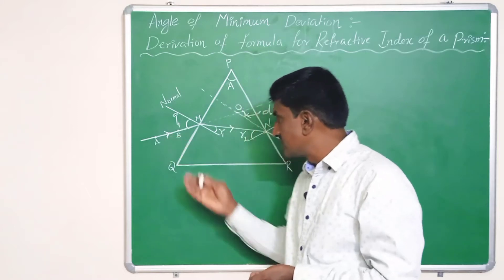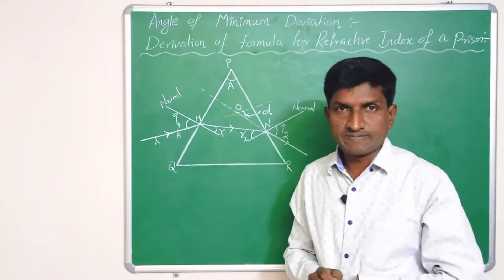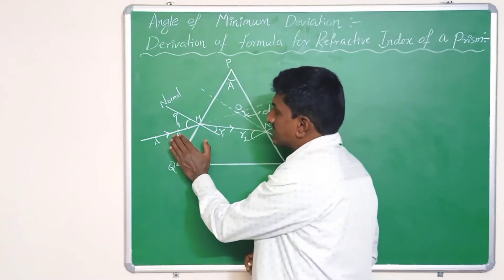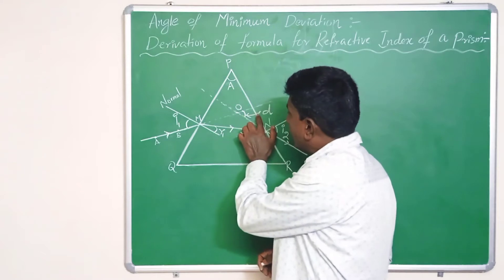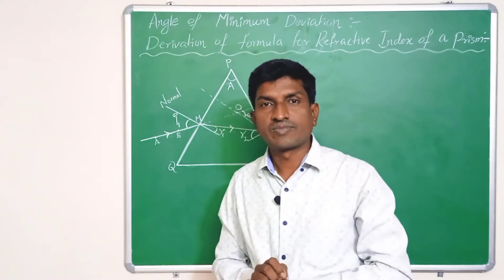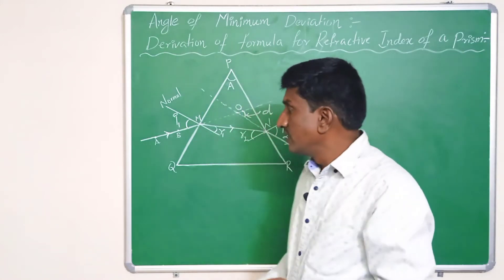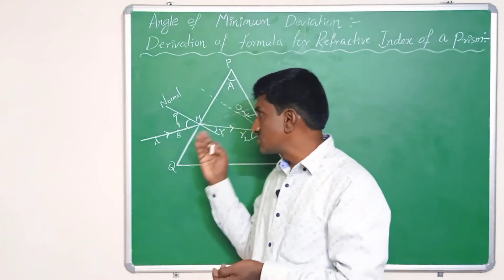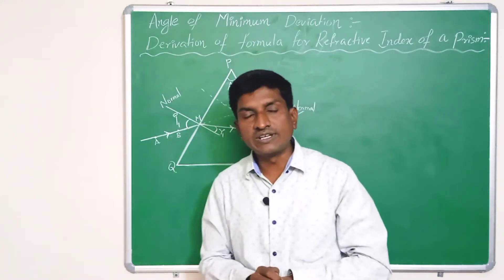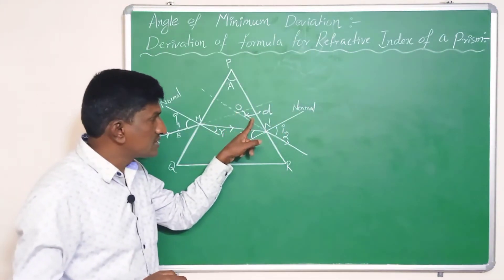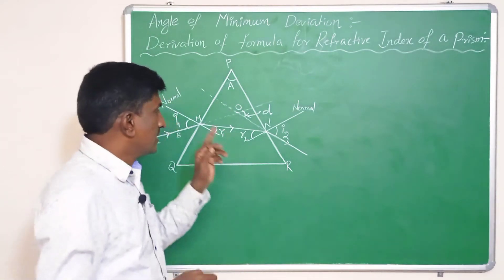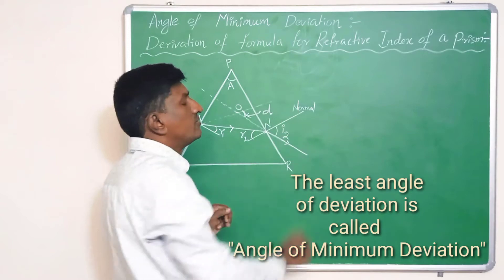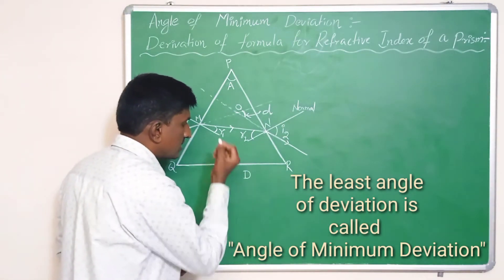If you change the angle of incidence, the angle of emergence also changes, and as the angle of incidence changes, the angle of deviation also changes. If we increase the angle of incidence, the angle of deviation first decreases and reaches a minimum value. If you keep increasing the angle of incidence after reaching that minimum, the angle of deviation starts increasing again. This minimum value is the angle of minimum deviation, denoted by capital D.